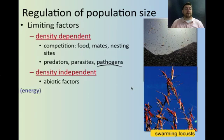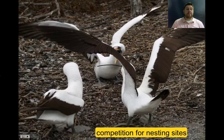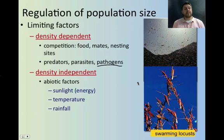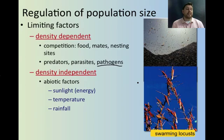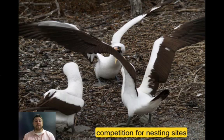Density independent factors are usually abiotic — things like sunlight, temperature, rainfall, and natural disasters — where it doesn't really matter how dense the population is; it's going to affect them the same way. For example, competition for nesting sites: would that be density independent or density dependent? It would be density dependent, because the denser the population is, the less likely you are to get your prime nesting site choice, and you may have to fight other birds to get the best environment.